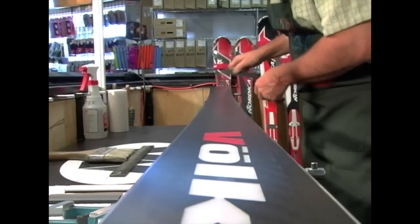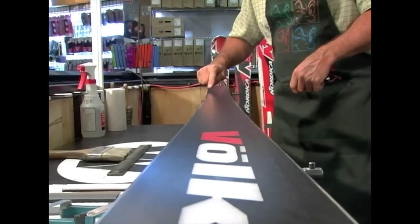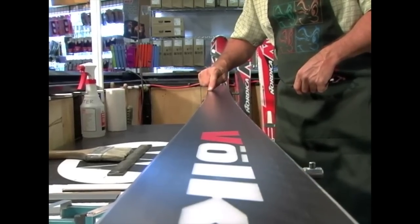By rubbing lightly across with the straight bar, I can then come back and take a look at the mark that I've made. If the mark shows that I've got good contact edge to edge, I know that my base is flat and I can begin my base beveling.